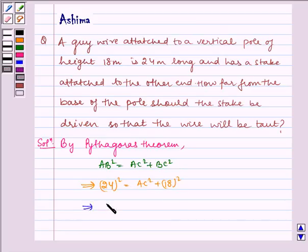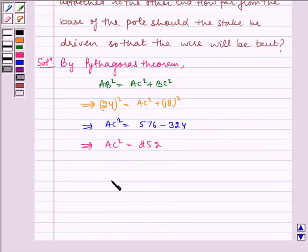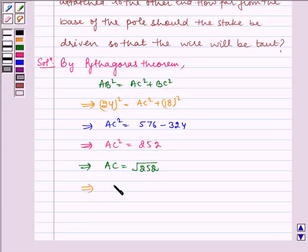Which implies AC square is equal to 576 minus 324 which implies AC square is equal to 252. Which implies AC is equal to square root of 252 which implies AC is equal to 6 root 7.